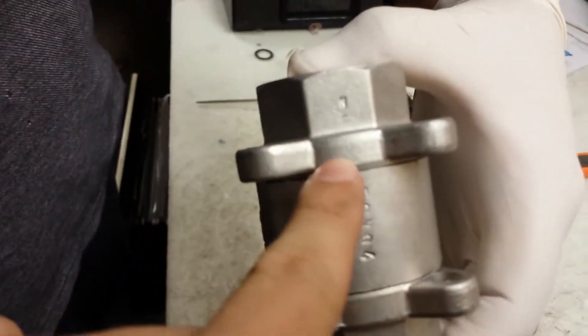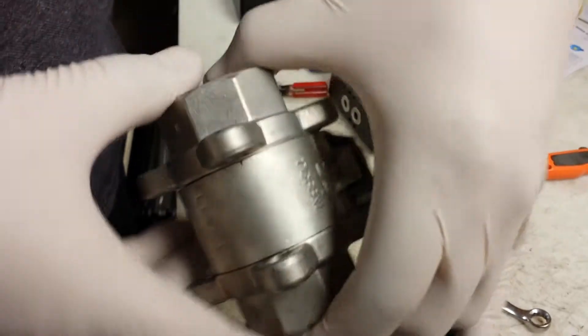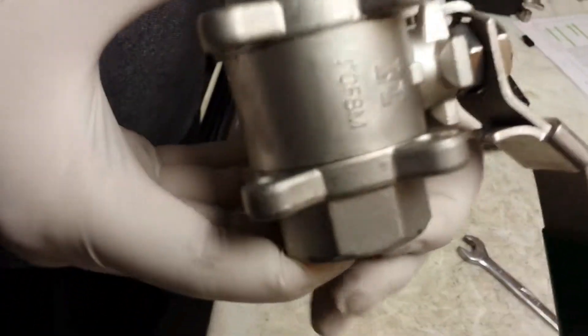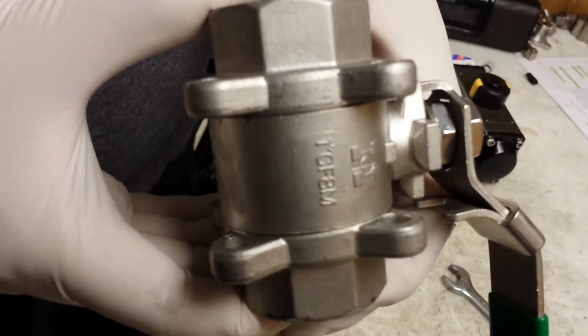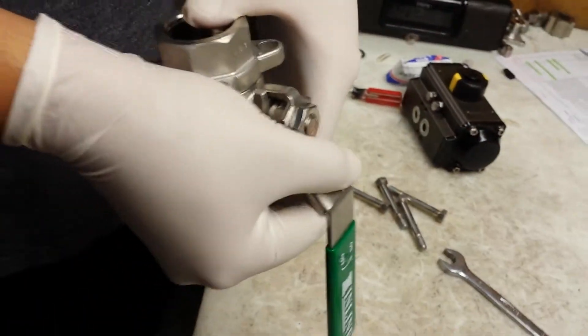And here you can see if there's any white showing around here or here it likely isn't put on right. But here David has none of the white PTFE seal showing. So we can continue.